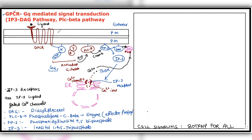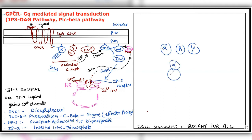Here, the receptor is the serpentine receptor, which we call GPCR — it passes through the membrane 7 times, which is why it is called serpentine. This is its ligand binding domain, and this is its internal domain which is linked to the G protein. As I told you in previous videos, the G protein is made up of alpha, beta, and gamma — 3 subunits. When it is inactive, it is bound to GDP. The alpha and gamma subunits are inside the membrane, and the receptor linked to this G protein is the GPCR.